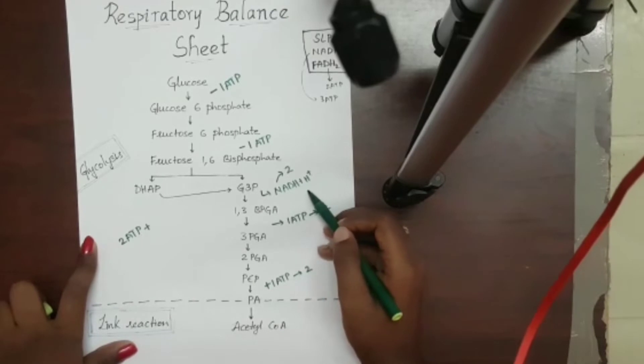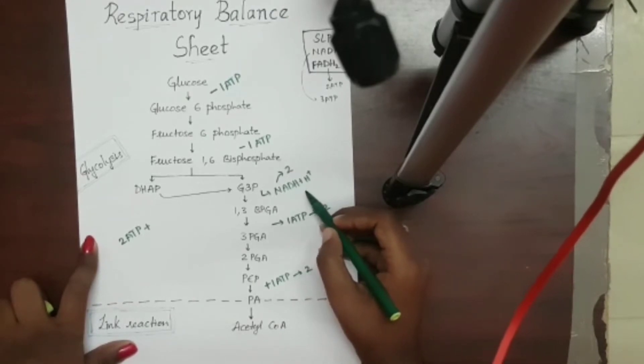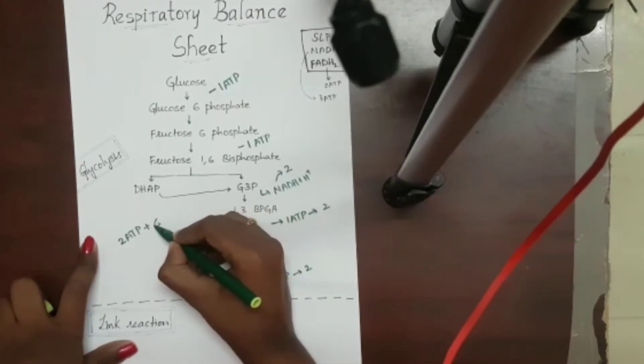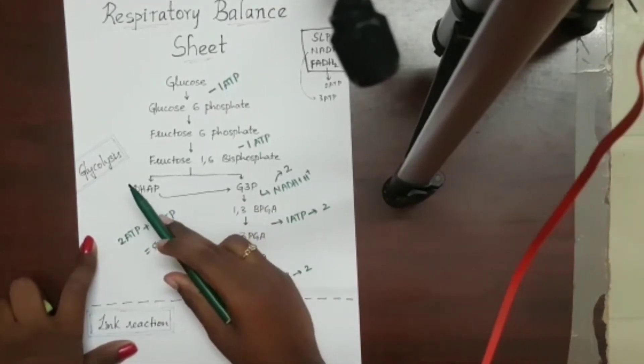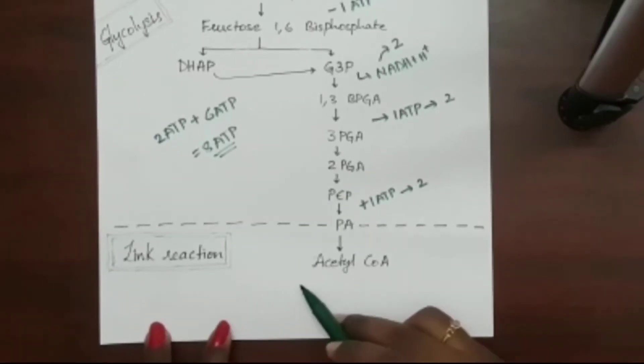Plus, here there are 2 NADH++, H+ released. They will pass through electron transport system and give 2 times 3, 6 ATP. So the net gain of ATP in glycolysis would be 8 ATP.